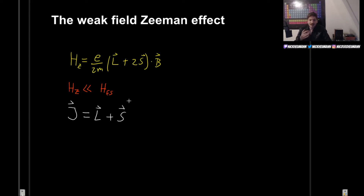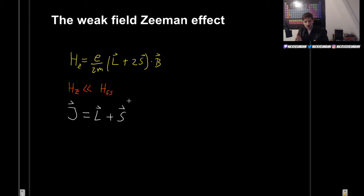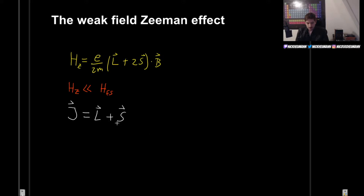Neither L nor S are separately conserved if we are in the presence of this external magnetic field. The good thing is that J is indeed conserved. You can verify that by taking the commutators with the Hamiltonian. So J is good; the others are not so good.